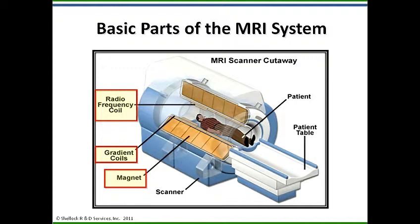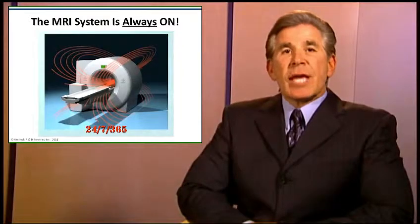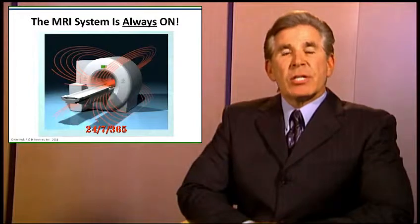Here is a diagram showing the basic parts of a typical MRI system, which may also be referred to as the scanner. Note the most important components of this system, which include the extremely powerful magnet, the gradient magnet coils, which generate rapidly changing magnetic fields, and the radio frequency or RF coil.